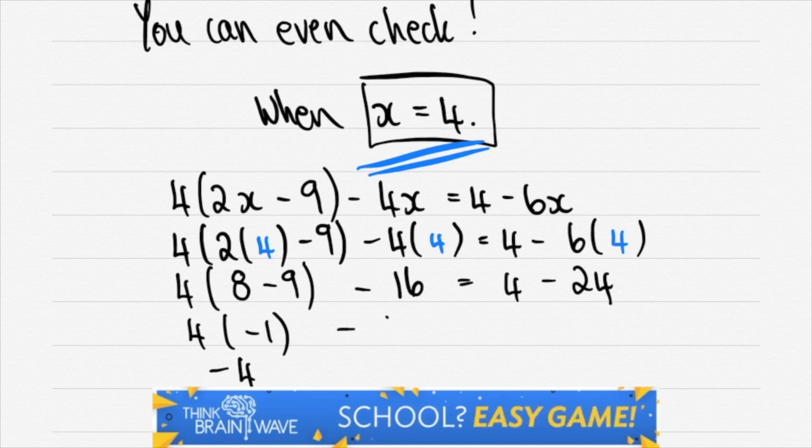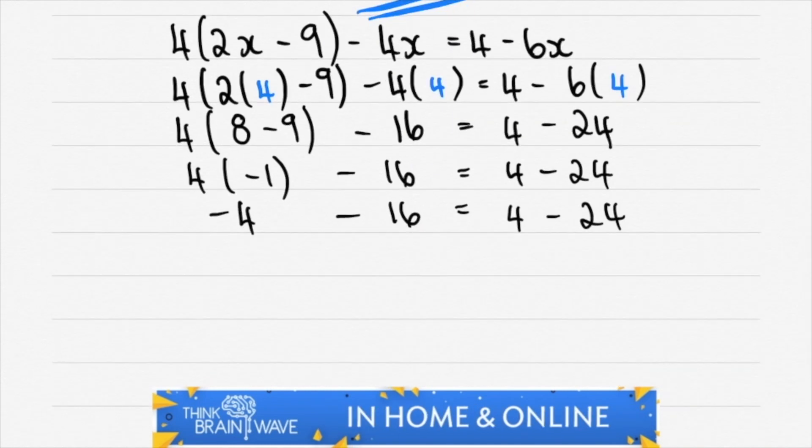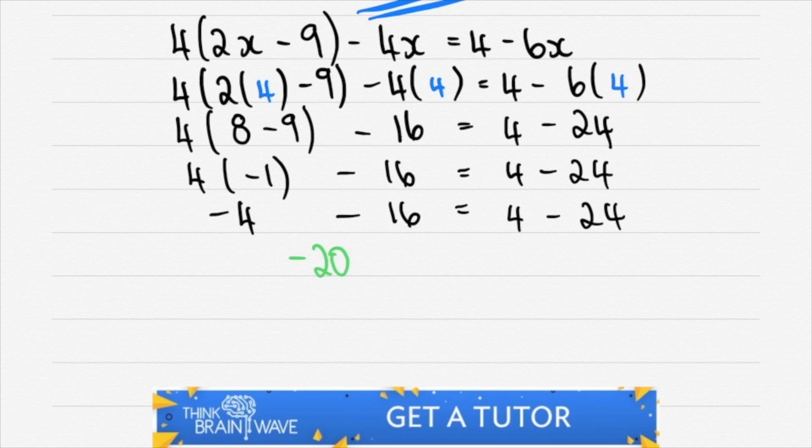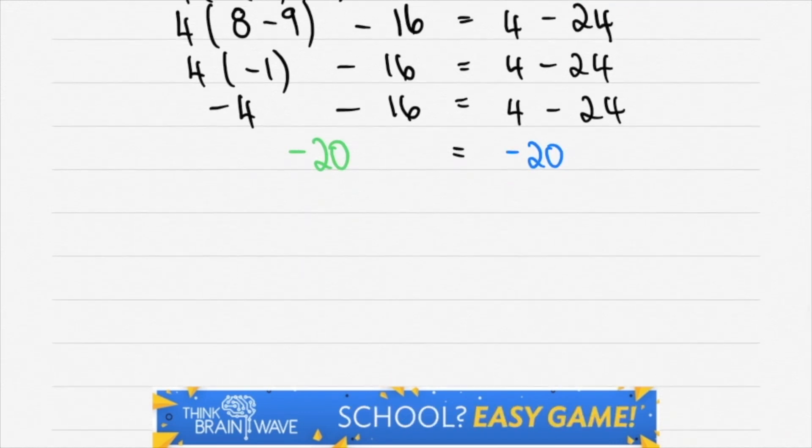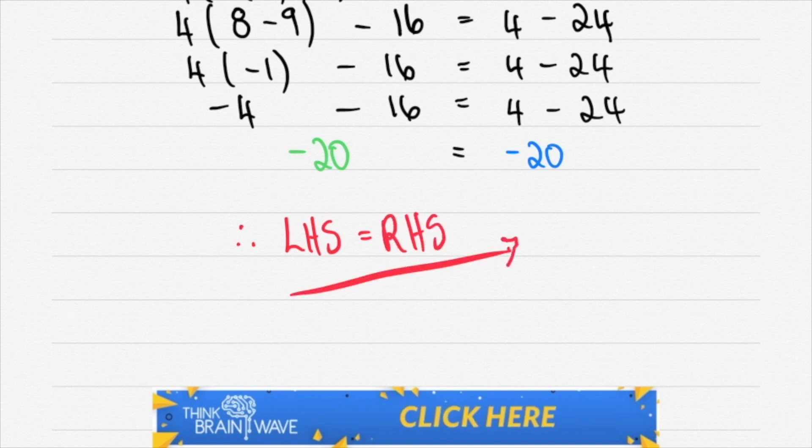So 8 minus 9 is minus 1. You are left with minus 20 on the left and you are left with minus 20 on the right. You see minus 20 in green. It is green for go and blue for beautiful. And therefore we have left hand side equal to our right hand side.